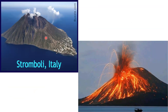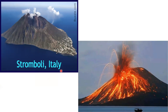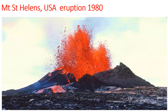Examples of active volcanoes are Mount Stromboli in Italy, located in the Mediterranean Sea, which is also called the lighthouse of the Mediterranean Sea because of its frequent eruption. It is the longest continuously ever-erupting volcano for more than 2,000 years. Mount St. Helens in the USA last erupted in the year 1980.